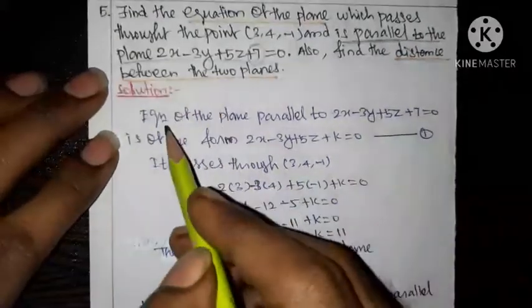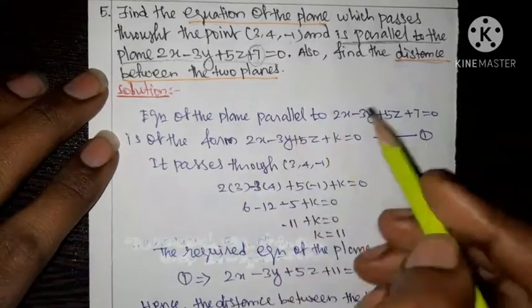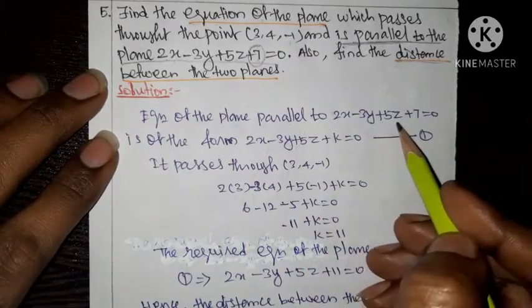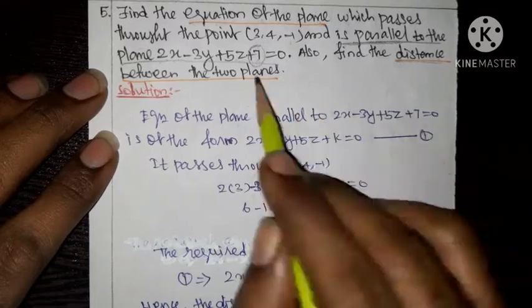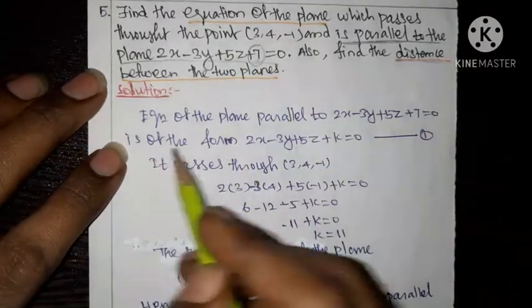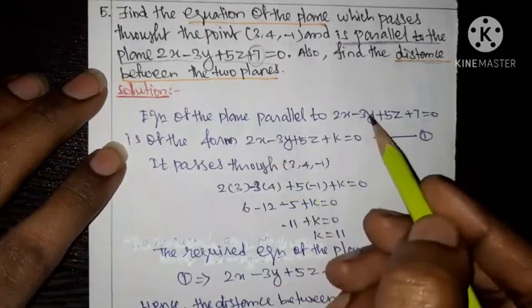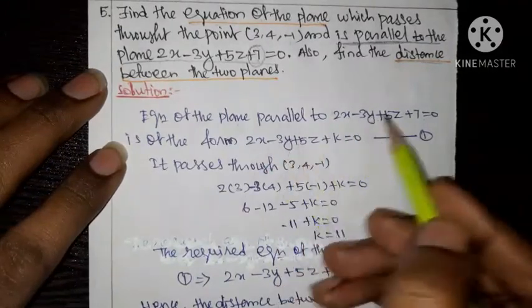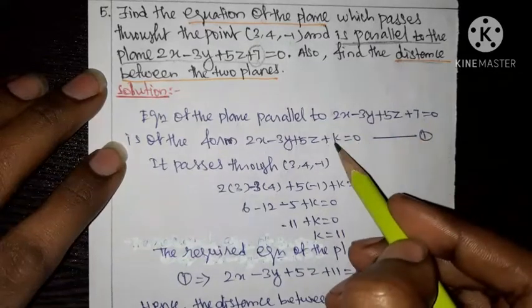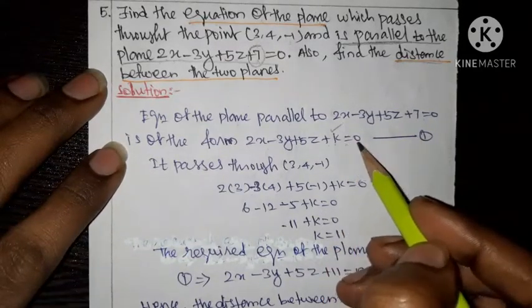The equation of the plane parallel to 2x minus 3y plus 5z plus 7 equal to 0 is of the form: 2x minus 3y plus 5z plus k equal to 0, where k is some constant to be determined.